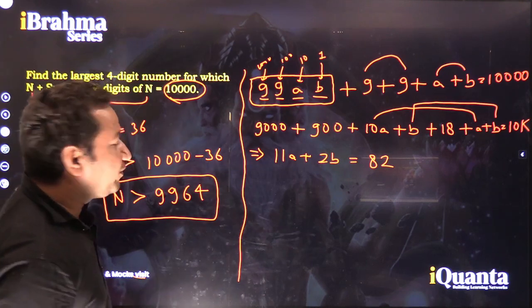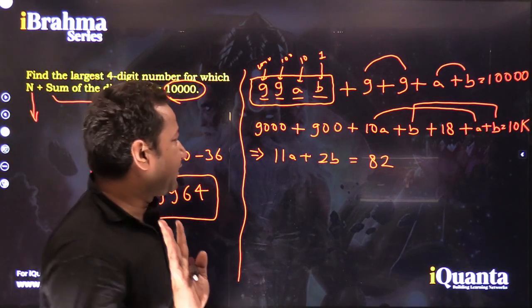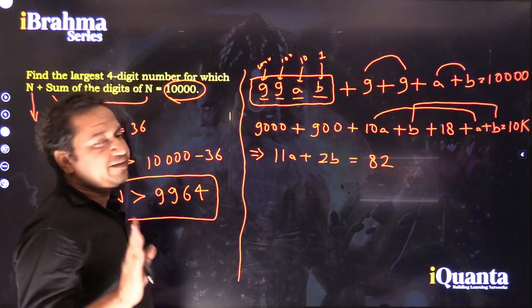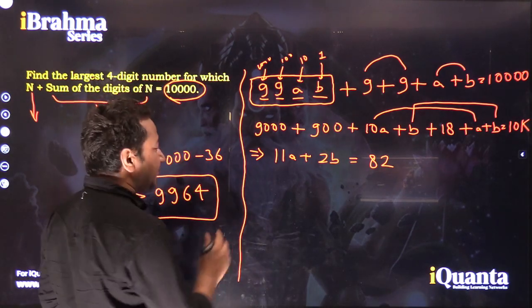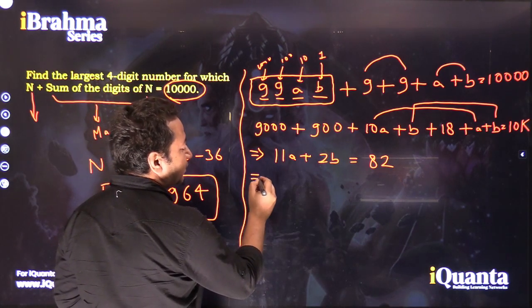So this is what we have to solve now. The first two digits are confirmed as 9 each. The other two digits are A and B, which we will find from this equation: 11A + 2B = 82. There is a learning in this question.